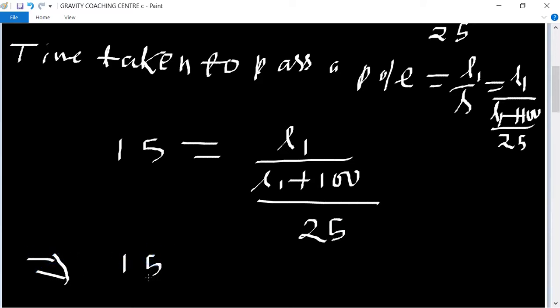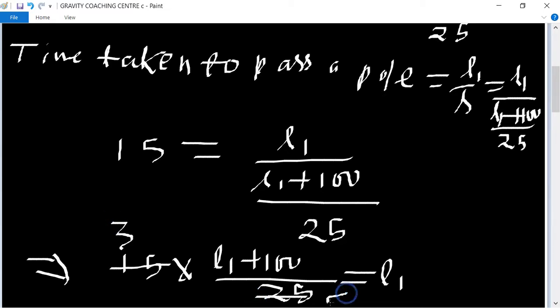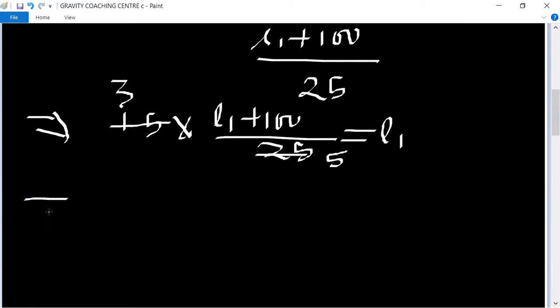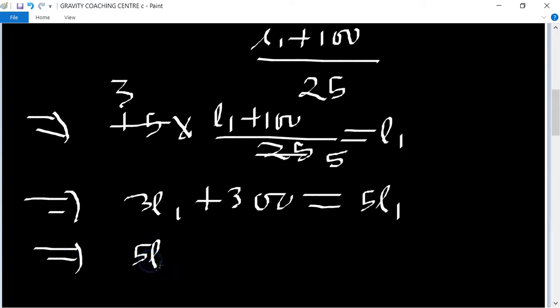15 into L1 plus 100 upon 25 equal to L1. After cross multiplication, 3L1 plus 300 equal to 5L1. So 5L1 minus 3L1 equal to 300.